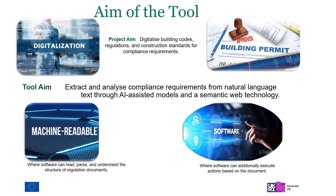Within this framework, the tool aims to extract and analyze compliance requirements from natural language text through AI-assisted models and semantic web technology. This is because building codes and regulations often involve complex language and technical jargon that can be difficult to understand and apply in practice. Hence, the objective of the tool is to convert regulatory information typically written in text into a structured or standardized representation that computers or machines can readily understand and process. Through our tool, regulation documents are transformed into machine-readable and machine-executable data.